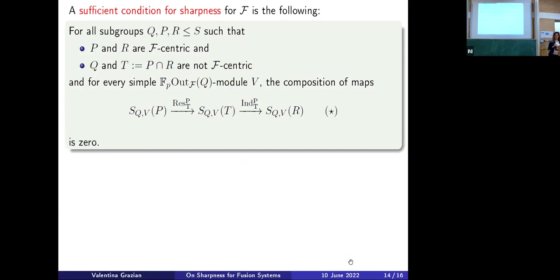And why do we care about simple Mackey functors? Because Bielsen-Park gave us a sufficient condition: if the condition in the box is satisfied, then we have sharpness. The condition is: for any choice of Q, P, and R subgroups of S, where P and R are F-centric (self-centralizing and all fused subgroups self-centralizing), while Q and T = P ∩ R are not F-centric, and for every module V, the composition of maps S(Q,V)(P) → S(Q,V)(T) → S(Q,V)(R) — restricting from P to T, then inducing from T to R — is zero. If you can prove this composition is zero for every choice of Q, P, and R, you have sharpness.